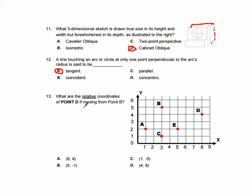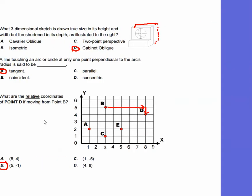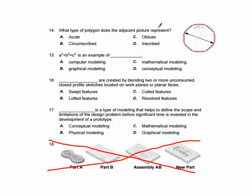Next page. In this particular hint, what you've got here is a three-dimensional sketch. It's drawn true to size in its height and width, but foreshortened in its depth as shown in the right. We didn't spend a lot of time covering this in our classes, but there are two types of oblique drawings. One is called cabinet, and one is called cavalier. Cabinet oblique is the one where the depth is foreshortened. Cavalier would be a true depth. So it would be a cabinet oblique.